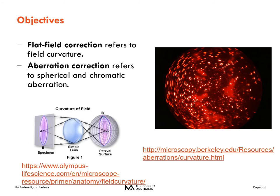Field curvature means you get a sharp focus at the center of your field of view but blurring toward the edges — a fishbowl effect — unless extra lenses flatten it out. This is what we mean by flat field or flat field correction. Unless you're only looking at the very center of your image, you really want to use a plan objective.